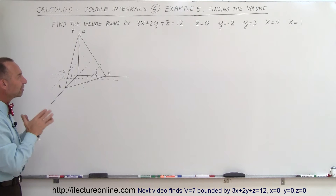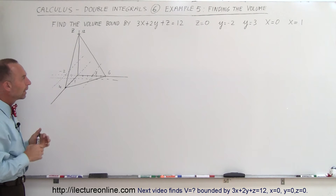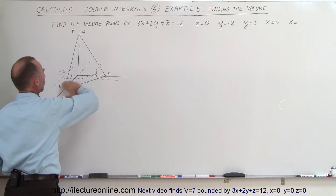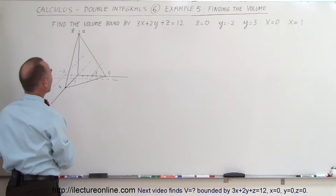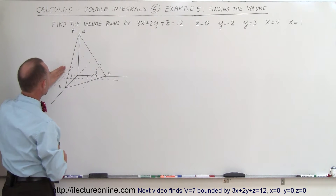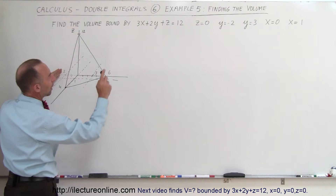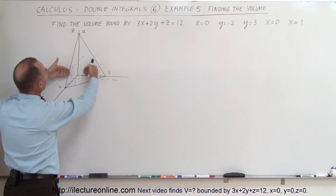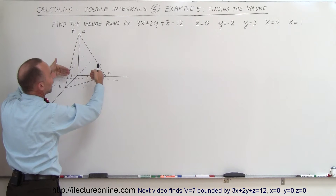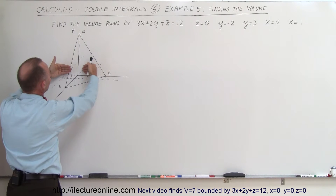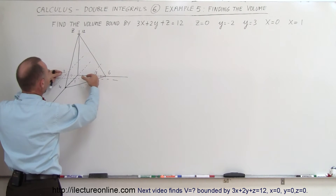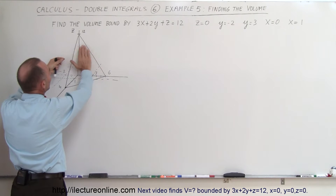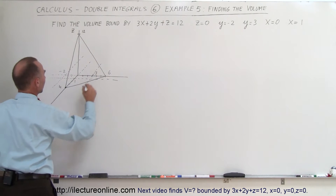We're trying to find the volume bounded by that plane, by z equals 0 (the xy-plane), by y equals negative 2, by y equals 3, by x equals 0 (the yz-plane), and by x equals 1. We have a rectangular shaped region going up until it reaches that plane.